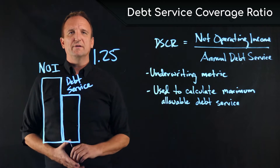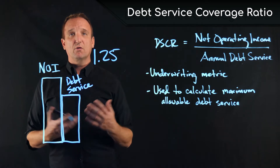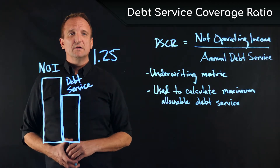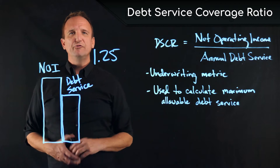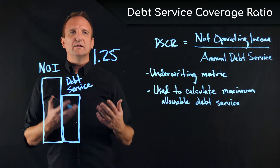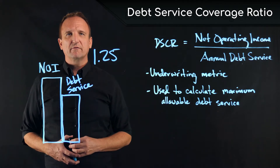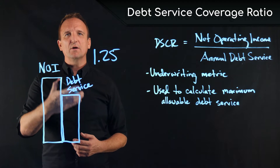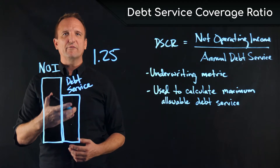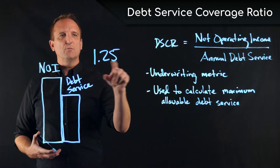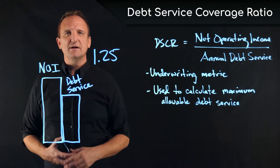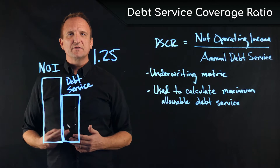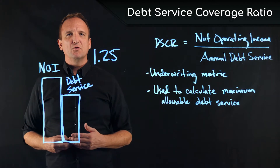Debt service coverage ratio tells us how much extra cushion we need to have in our net operating income over the debt service, or the annual loan payments. In this case, a 1.25 debt service coverage ratio means that the NOI needs to be 1.25 times the amount of the annual loan payments.